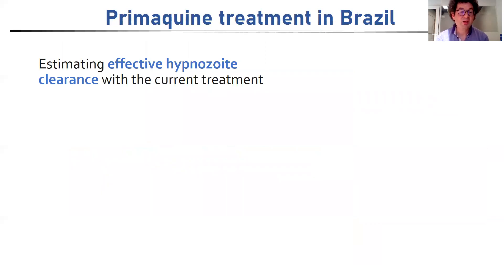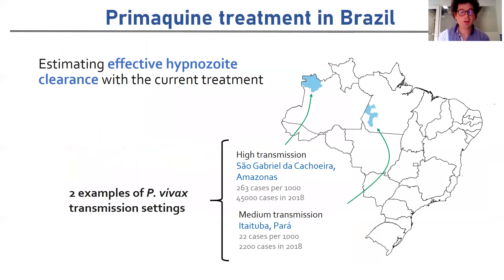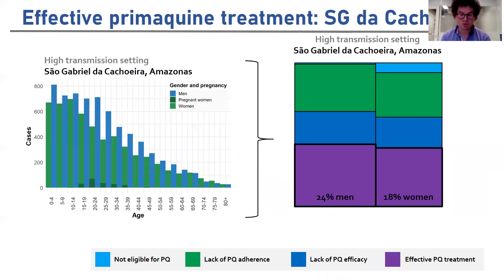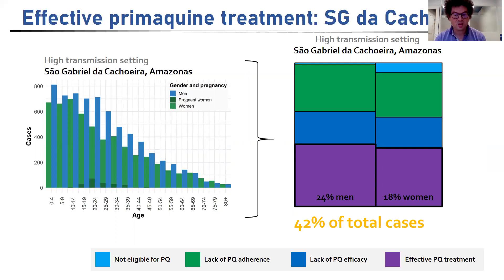Next we consider estimating the effective hypnozoite clearance with the current treatment in Brazil, looking at two case studies: a high transmission municipality in Amazonas state and a medium transmission municipality in Pará state. Looking at the high transmission setting of São Gabriel da Cachoeira, we see the age and gender distribution of cases of vivax in 2018 — men in blue, women in green. Based on this distribution we can generate a treemap. This square represents 100% of cases: in purple are the individuals effectively treated, in dark blue those not effectively treated due to lack of primaquine efficacy, in green individuals that failed to adhere, and in light blue individuals not eligible for primaquine. In total we estimate that 42% of cases here were effectively treated.